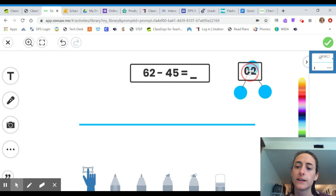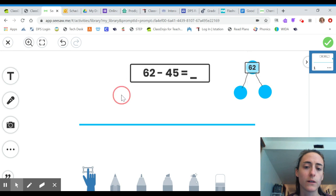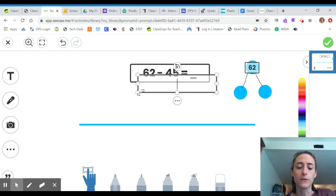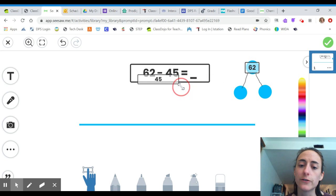I'm going to put that over here. That is the whole number that we have. Then we're going to take out 45. So I'm thinking, okay, I'm going to write the number 45 and I'm going to place that in one of my parts.